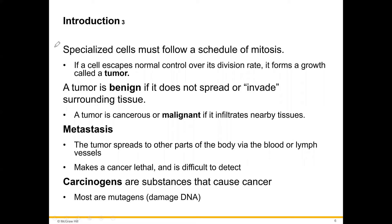Specialized cells — mature cells like muscle, nerve, liver, kidney, and skin cells — are not supposed to divide at all, or must follow a schedule of mitosis, dividing only when needed and as many times as needed. If a cell escapes normal control over its division rate, it forms a growth called a tumor. A tumor is benign if it does not spread or invade surrounding tissues. A tumor is cancerous or malignant if it infiltrates nearby tissue.